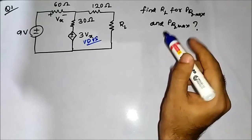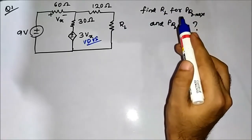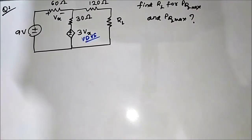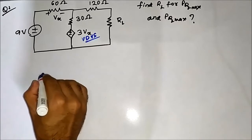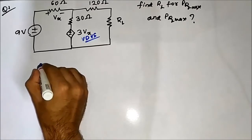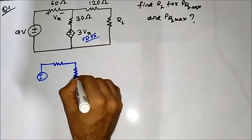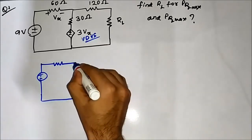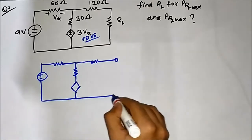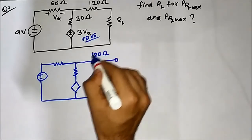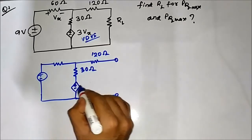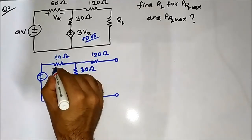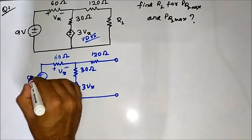We will use the Thevenin equivalent circuit approach. We have to find the Thevenin voltage first, so we have to redraw the whole circuit. We will open circuit RL. The circuit has a 120 ohm resistor, 30 ohm resistor, the dependent source 3VX, a 60 ohm resistor with voltage VX across it, and a 9V source.